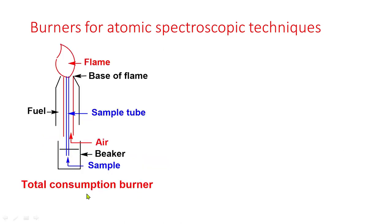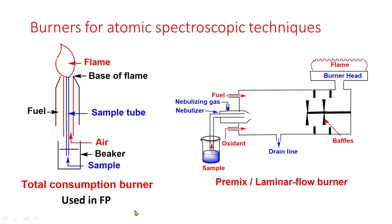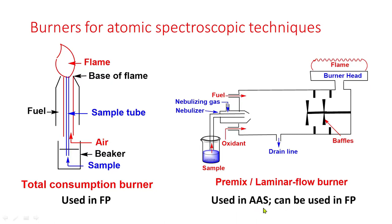This diagram shows the total consumption burner, which is used in flame photometry. This diagram shows the premix or laminar flow burner, which is used in atomic absorption spectrophotometry and can also be used in flame photometry.